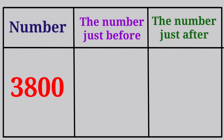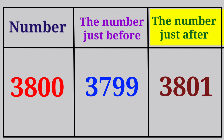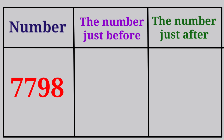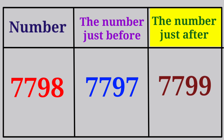The given number is 3800. The number just before 3800 is 3799. The given number is 7798. The number just before 7798 is 7797, and the number just after 7798 is 7799.